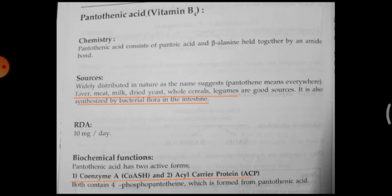Now we are going to discuss about pantothenic acid, which is also called as vitamin B4. It is composed of pantothenic acid and beta-alanine held together. The sources of pantothenic acid are liver, meat, milk, dried yeast, whole cereals, and legumes. It is also synthesized by bacterial flora in the intestine.